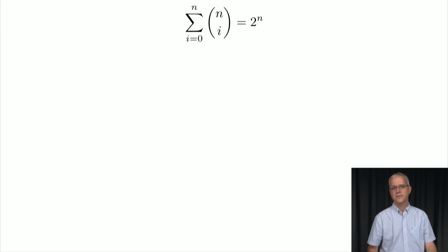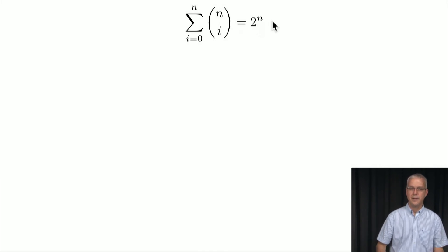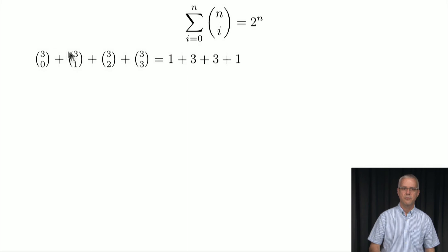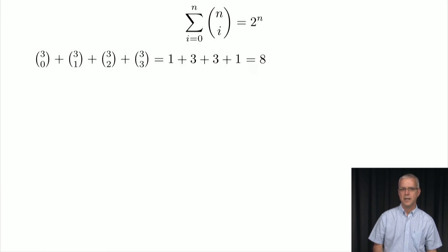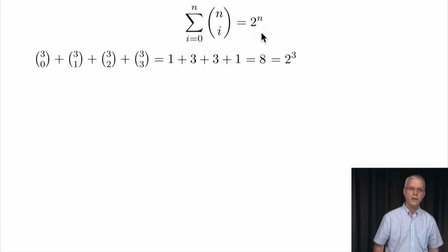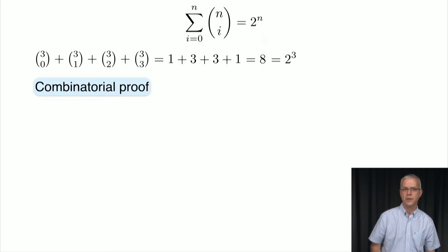Here's another very useful identity: the summation from i=0 up to n of n choose i equals 2 to the n. For example, 3 choose 0 + 3 choose 1 + 3 choose 2 + 3 choose 3 = 1 + 3 + 3 + 1 = 8, which is 2 cubed. We'll give the combinatorial proof here, with an algebraic proof coming in the next video.